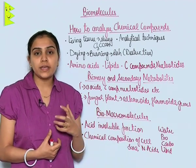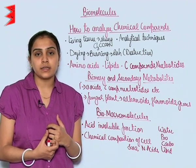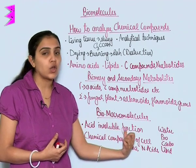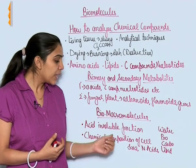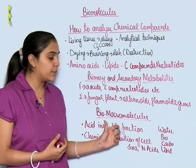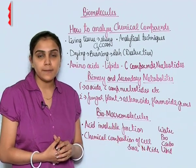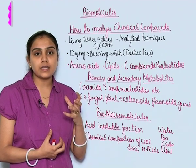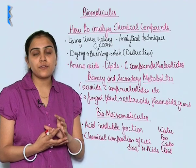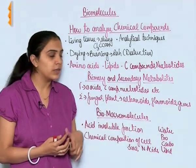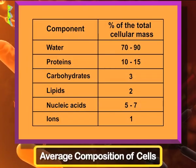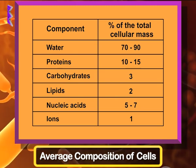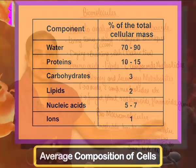Any biomolecule whose weight is less than one thousand Daltons is known as a bio micromolecule. All biomolecules that are in the acid-insoluble fraction are known as bio macromolecules, and they are basically responsible for the chemical composition of the cell. Lipids also come under bio macromolecules because when we break down the cell, lipids get extracted in the form of vesicles and hence appear in the acid-insoluble fraction. You can see in the table that the average composition of a cell shows water as the most abundant, followed by proteins, carbohydrates, lipids, nucleic acids, and ions.